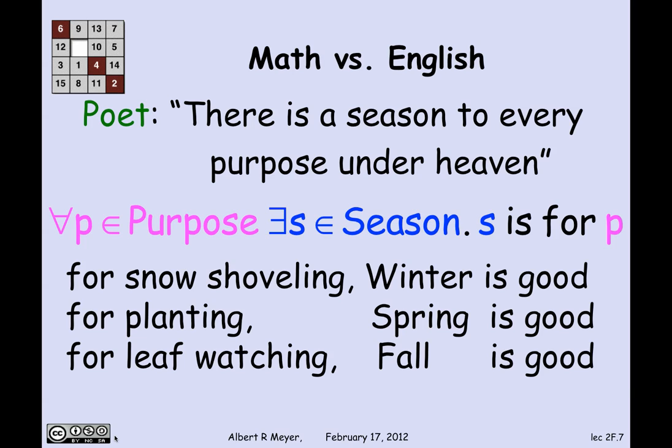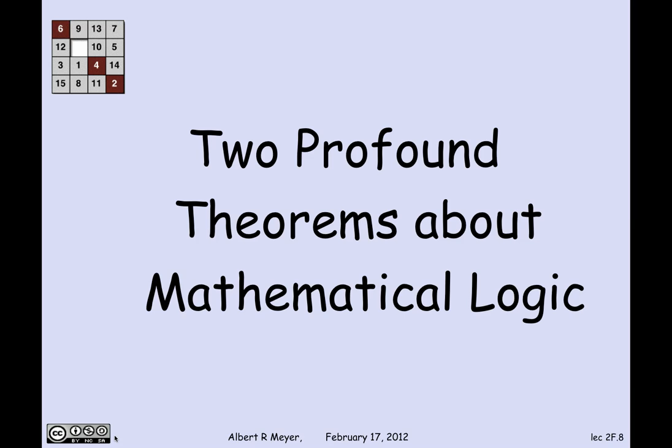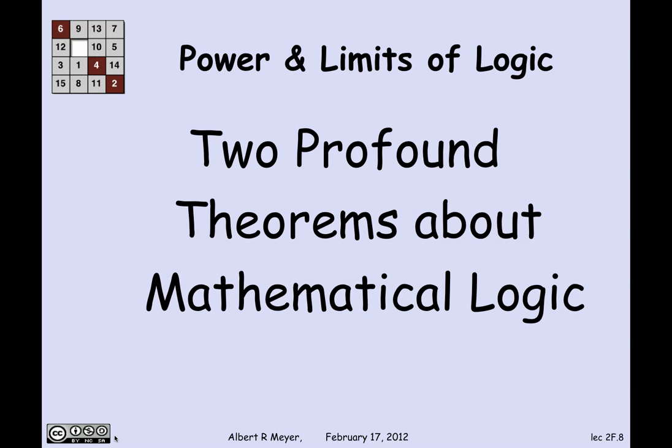That's the end of those two examples, whose point is just to warn you that translation into math is not something that can be done in a mindless, mechanical way. Sometimes the quantifiers really are meant to go the other way from the way they literally appear. Now we're going to shift to another topic: two profound theorems from mathematical logic about the properties of predicate calculus that describe the power and limits of logic.